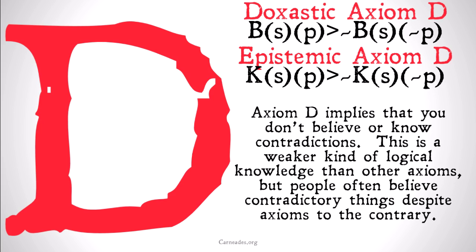Axiom D is going to be a weaker version of this logical omniscience. It implies that you don't believe or know contradictions. It's a weaker kind of logical knowledge, but it still may be too much to bear, because it seems that people often do believe contradictory things despite axioms to the contrary. As noted when objecting to Hintikka semantics, it seems that people disagree with things like the law of non-contradiction, which means they do believe things that are contradictory, or believe that there's at least something that is both P and not P. So Axiom D, while weaker, may have its own problems.